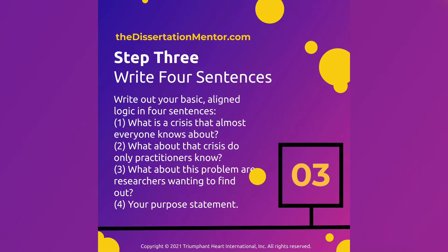Step three: write out your basic aligned logic in four sentences. Number one, what is a crisis that almost everyone knows about in the world — something even grandma watching the 11 o'clock news knows about. Number two, within that larger crisis, what do practitioners know that the average person does not? Number three, what about this problem are researchers wanting us to find out? And number four, your purpose statement.